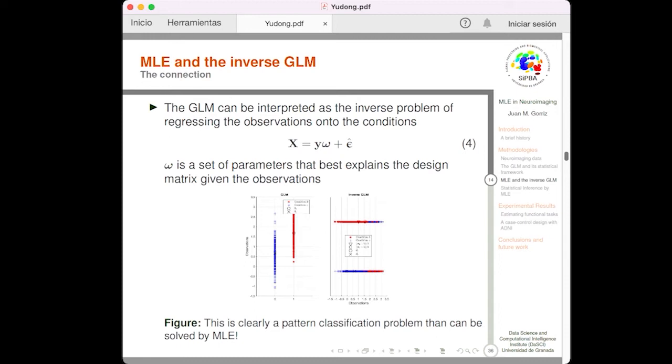Well, now it's time to answer the main question of the presentation. What is the connection between the GLM and the inference based on the GLM and the machine learning? How we perform the statistical inference by machine learning? Well, the GLM can be interpreted as the inverse problem or regressing the observation onto the conditions. So, if we compare equation 4 with equation 1, we clearly see that the variables are in the opposite side of the equation. So, now we are given the observations. We want to explain the experimental conditions by a set of parameters, omega, that best explain the design matrix given the observations. So, this is clearly a pattern classification problem that can be solved by machine learning.